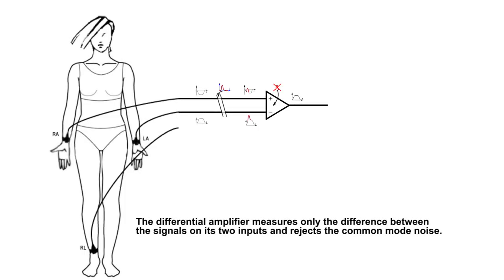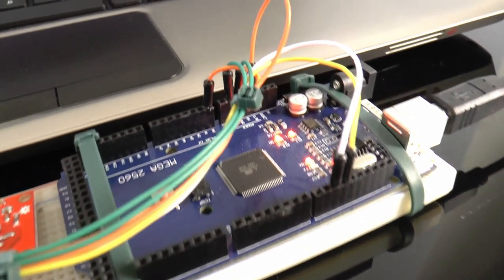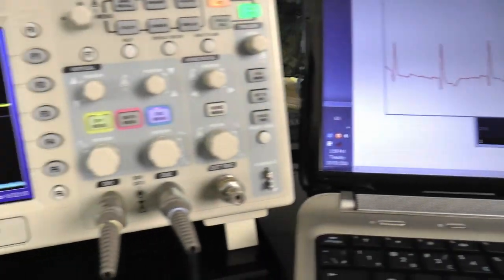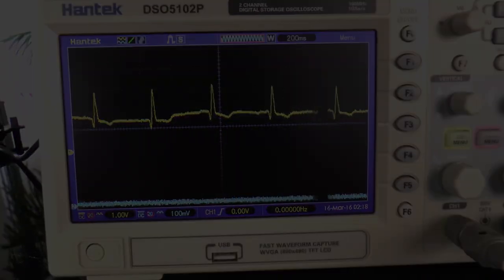This is why a differential amplifier is necessary to measure the voltage between the two signal leads on which the same noise source is present. The differential amplifier measures only the difference between the two leads and rejects the common mode voltage. This method greatly reduces the noise.